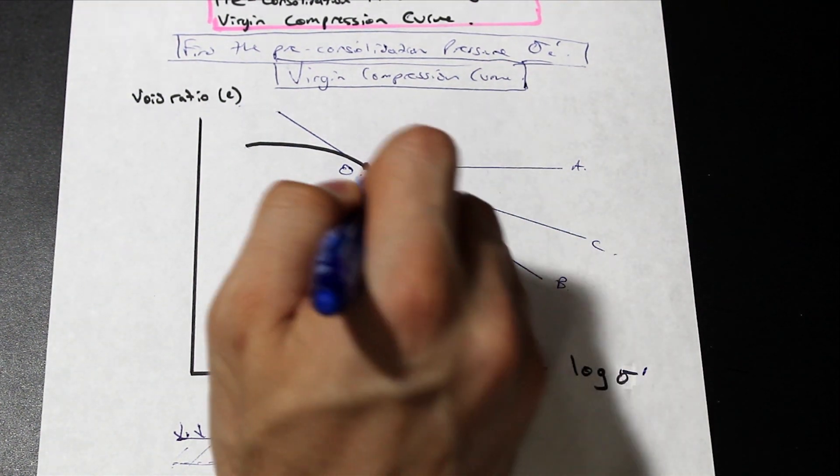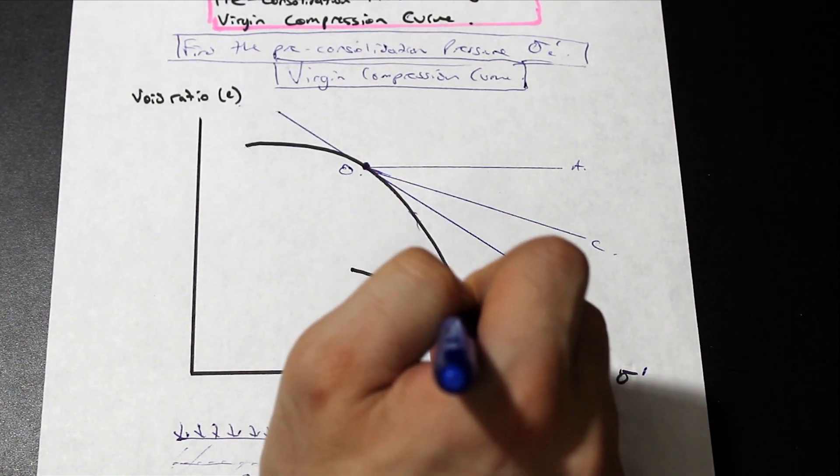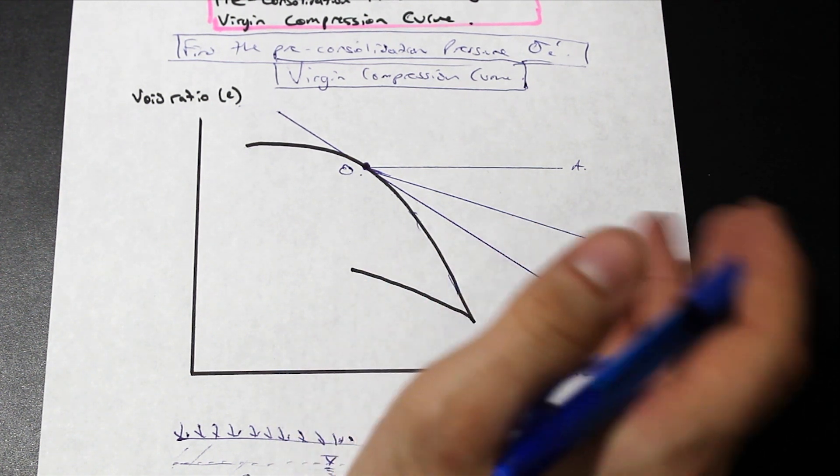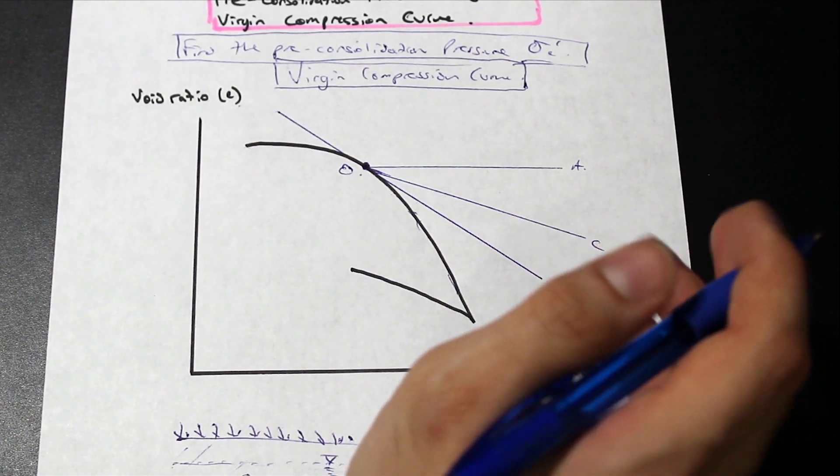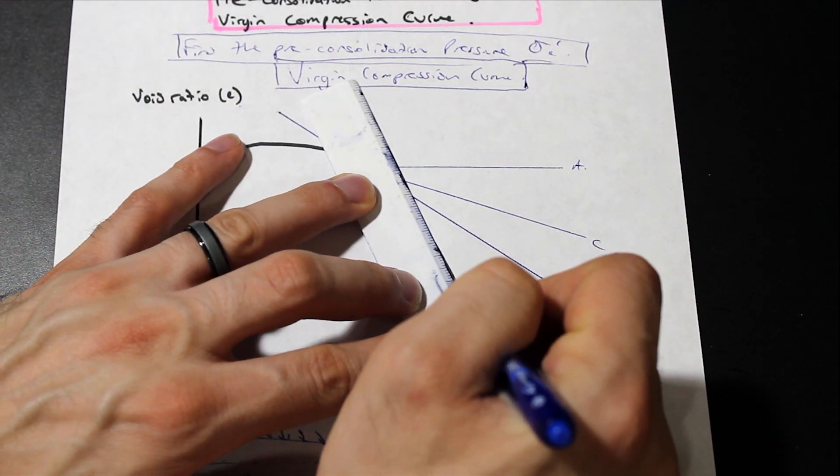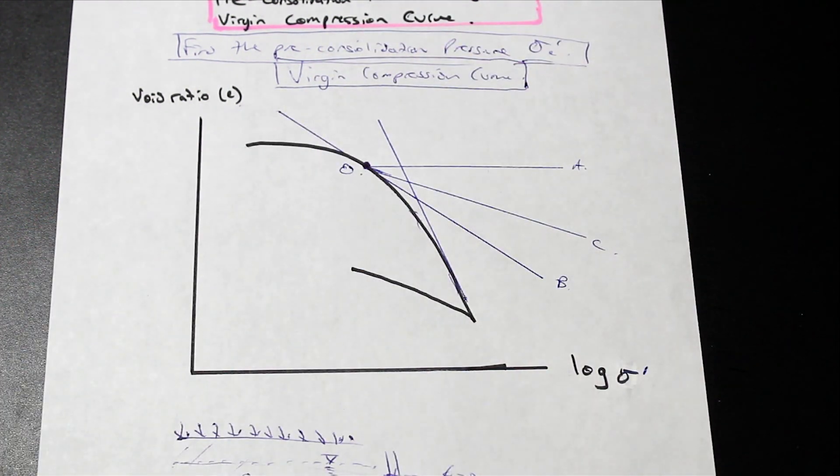So the next step, the straight line portion of this curve here, this straightens out. So this is straight. And we call that actually C sub C, so the coefficient of consolidation. And what we're going to do is we're just going to extend that line where the straight portion is. And we're just going to extend it straight up like this.